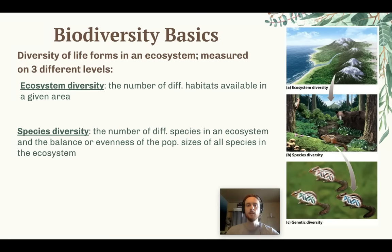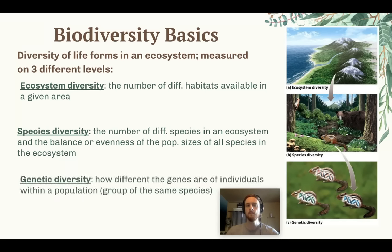Finally, we have genetic diversity, which refers to how different the genomes — or the groups of genes — are of different individuals in the population. If we look at these three chipmunks, they represent a population and each has a different genome, meaning different genes and different traits like tail lengths or fur color. All of these factors can be considered biodiversity.